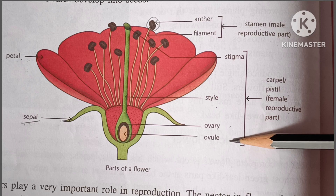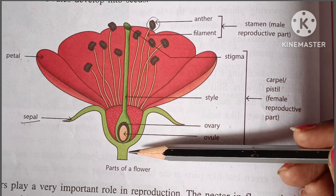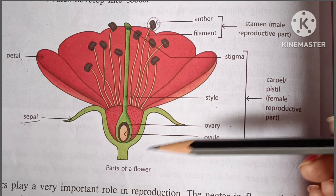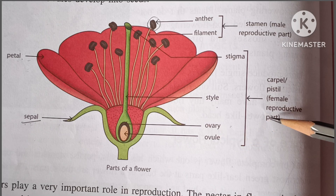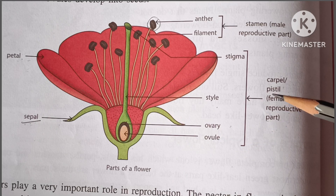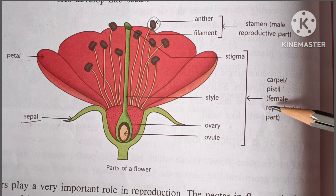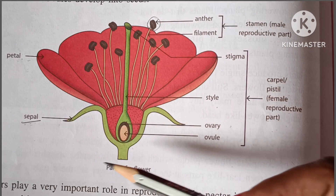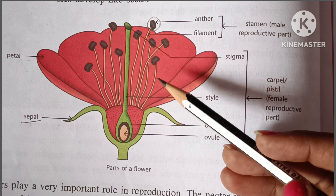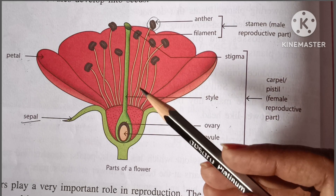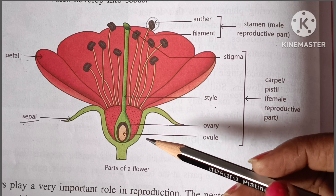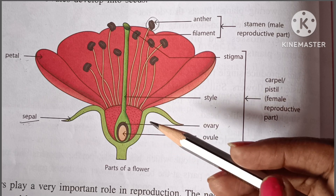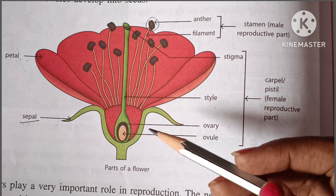This ovary contains one or many ovules. This ovule develops into the seed, and it helps in reproduction. That is why it is called the female part of the plant. This is the structure of the plant and the flower, and this flower helps in reproduction. If you like this video, please like and subscribe.